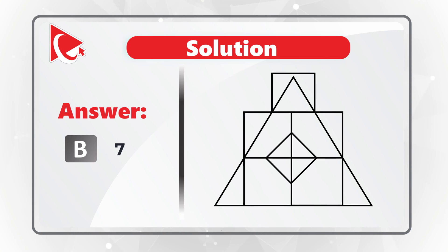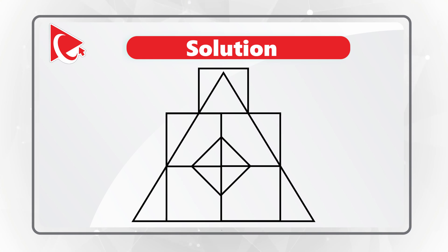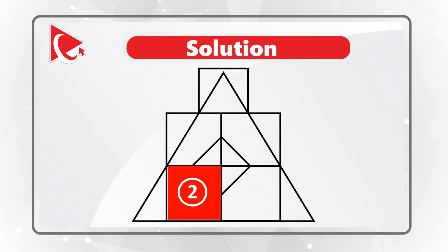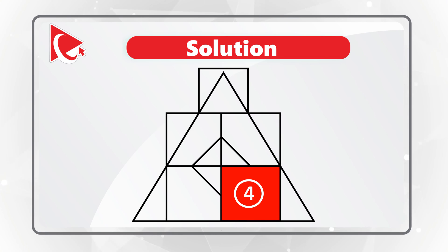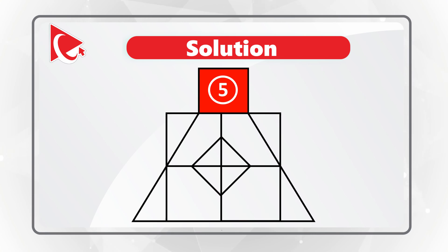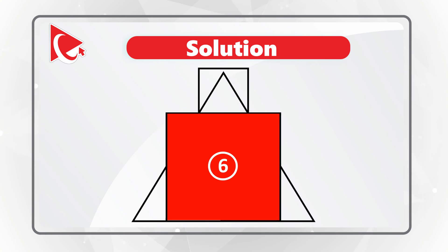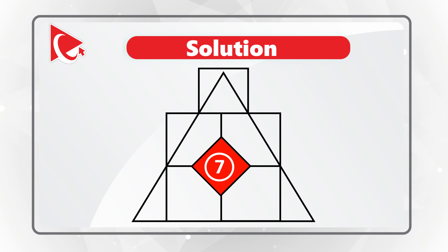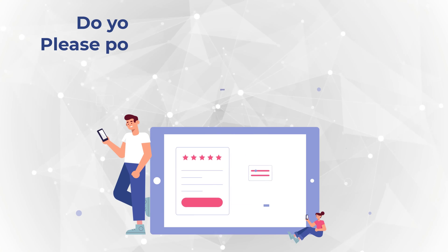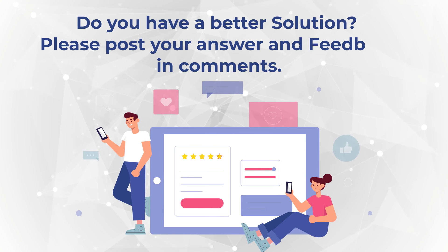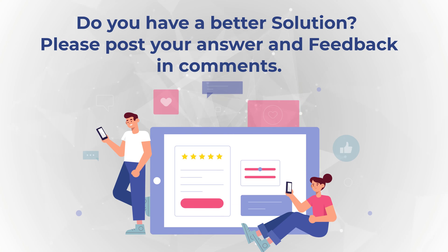Here are all the squares: 1, 2, 3, 4, 5, 6, and 7. Do you have a different number? I am looking forward to your response if you counted more or less squares.